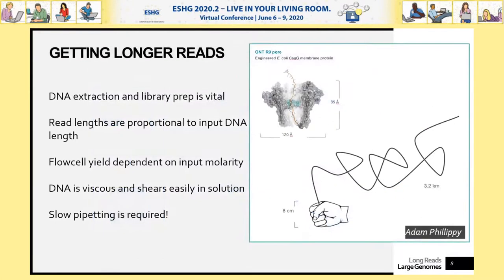It's not good enough to just use any whole DNA if you want really long reads. You need very high-quality, highly contiguous DNA, so your extraction and library preparation is vital. Read lengths are proportional to input DNA length — short molecules will only ever give you short reads — and you have to handle the DNA very carefully. As Adam Phillippy observed, if you scale the nanopore up to the size of a human fist, a megabase of DNA is a rope 3.2 kilometers long, and clearly that must be handled carefully or it will get tangled.